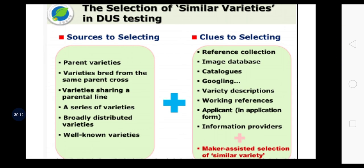For novelty, the variety should be new — at least one, two, three or many characters should be different from already existing varieties. For distinctness: a variety shall be deemed to be distinct if it is clearly distinguishable from any other variety whose existence is a matter of common knowledge at the time of filing the application. Distinctness is established by comparing the candidate variety with existing varieties or reference collection and can be distinguished as consistent differences and clear differences. Sources for selecting similar varieties include: parent varieties, varieties bred from the same parent cross, varieties sharing parental lines or series, broadly distributed or well-known varieties. Clues for selection include: reference collection, image database, catalog, online searches, varietal descriptions, working references, applicant information, or application form. Marker-assisted selection is also a very important test to identify similarities in varieties.